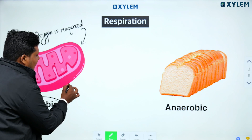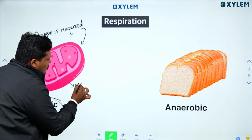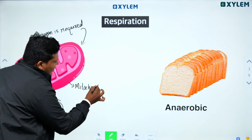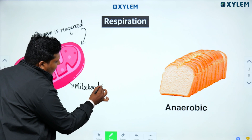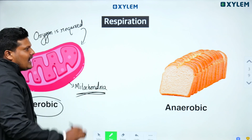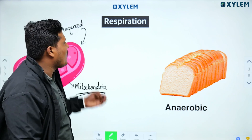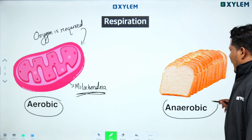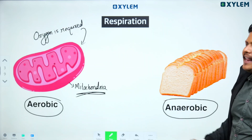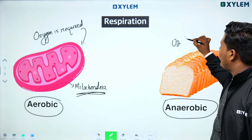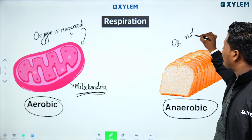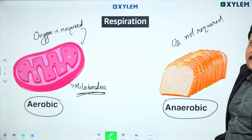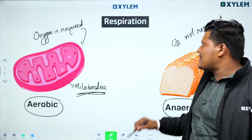In aerobic respiration, the process takes place in the mitochondria of the cell. Oxygen is required. This type of respiration where oxygen is not required is called anaerobic.